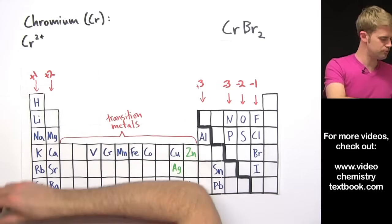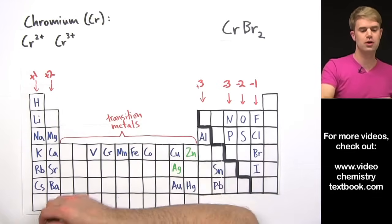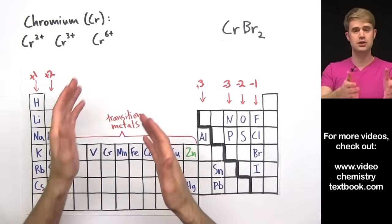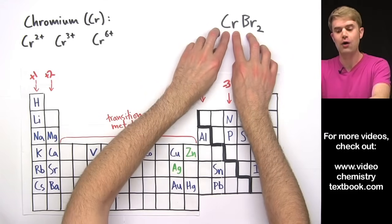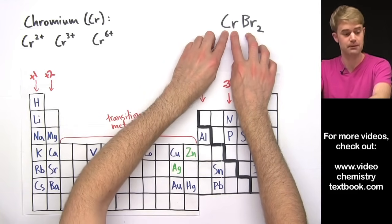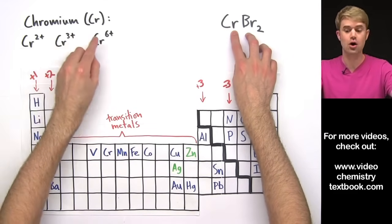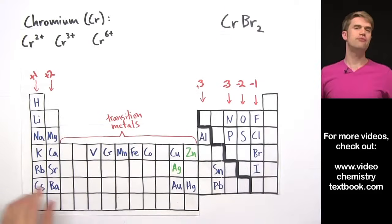When we name this compound, we have to figure out what charge chromium has here. It could be 2+, 3+, or 6+. Here's how we figure it out.